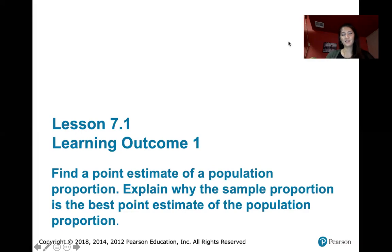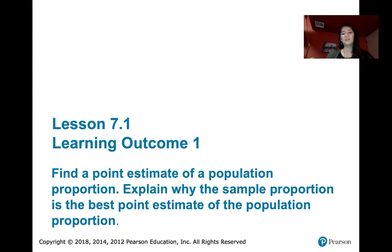In this video, we discuss learning outcome number one of lesson 7.1. Here we find a point estimate of a population proportion. First, we're going to define what that means, and then we're going to explain why the sample proportion is the best point estimate of the population proportion. We're also going to see how to compute that.